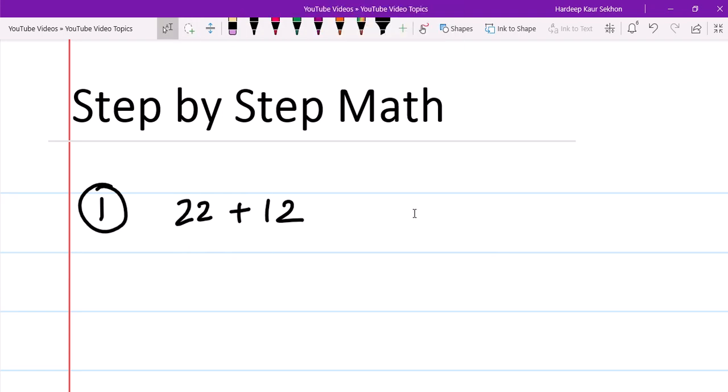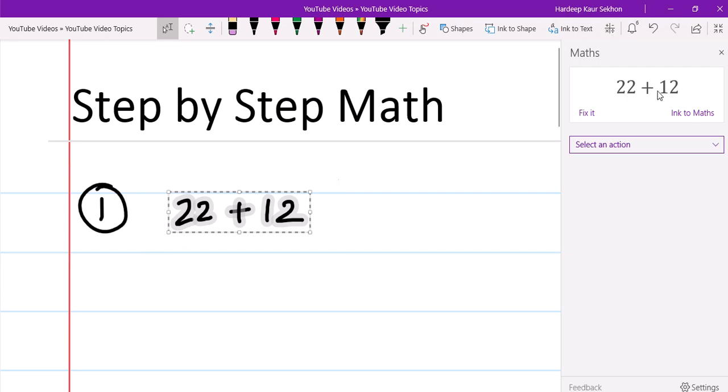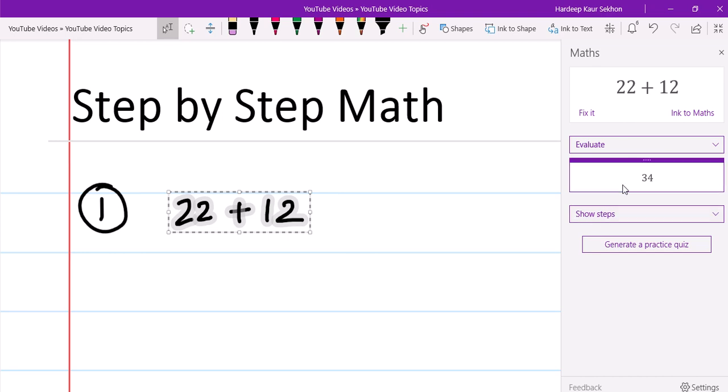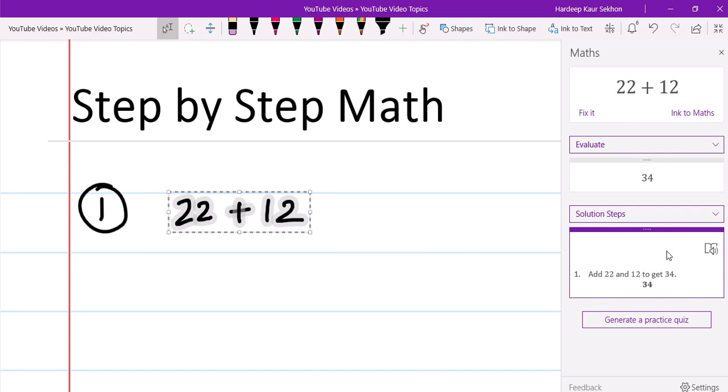When you're going to use the equation math tool, make sure you select your equation or expression. Click on that math feature right here. It interpreted correctly, so we don't need to fix this one. Then click select an action, click on evaluate. The answer is 34. The good thing about OneNote is you can look into the steps. Click on show steps, solution steps right here. Add 22 and 12 to get 34.